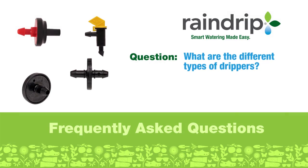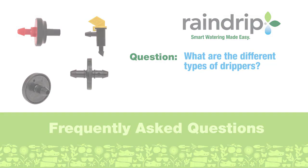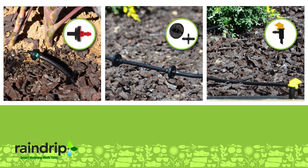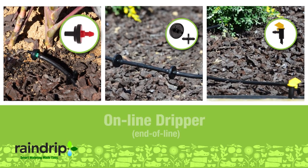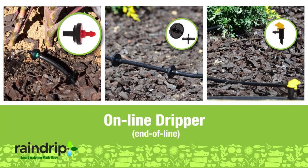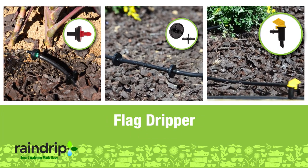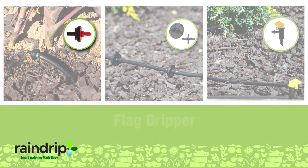What are the different types of drippers? There are three types of drippers: online or end-of-line, inline, and flag.